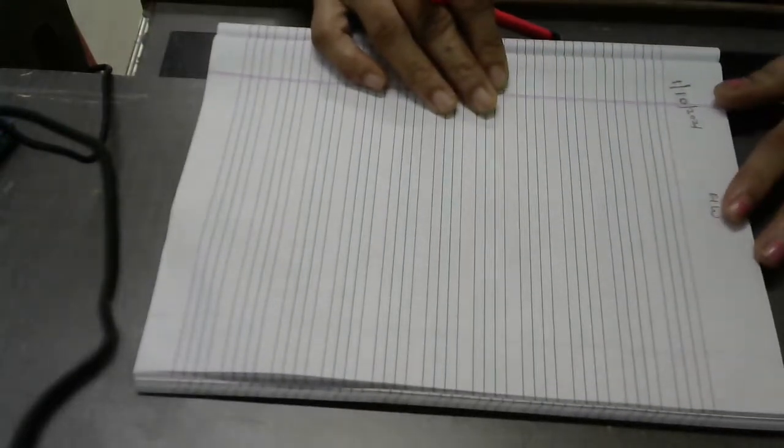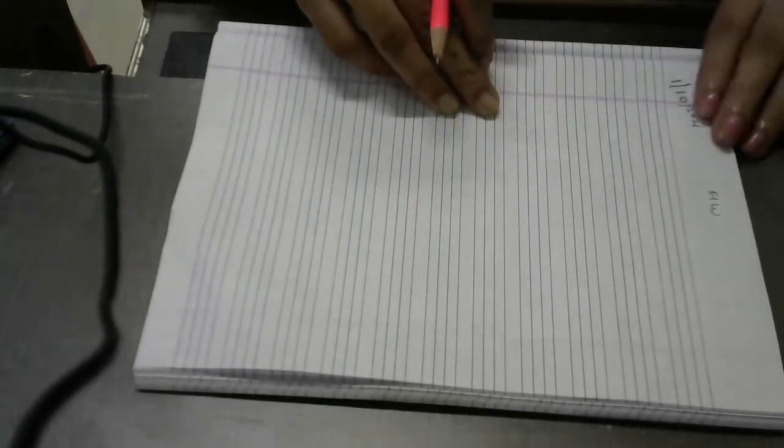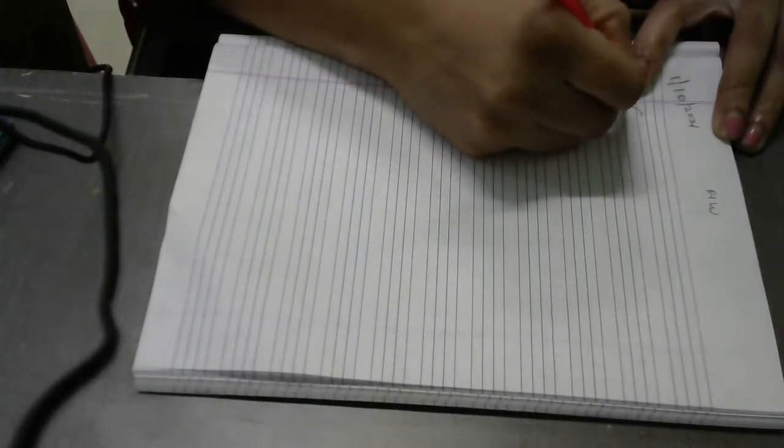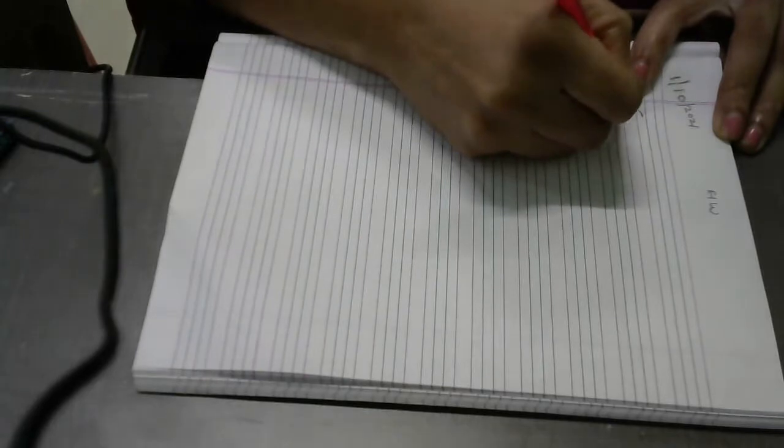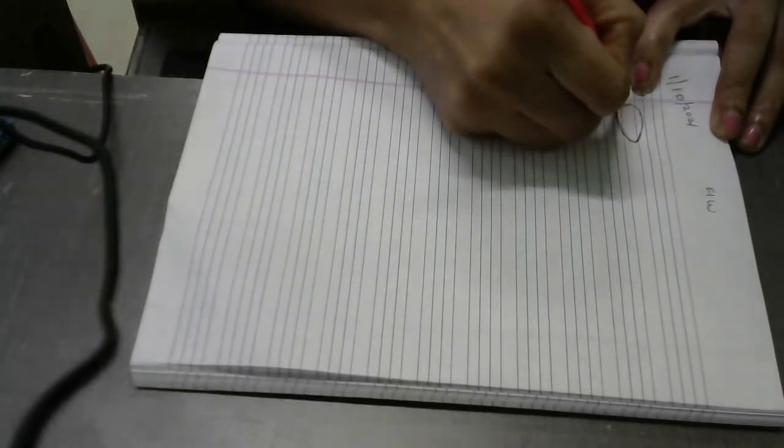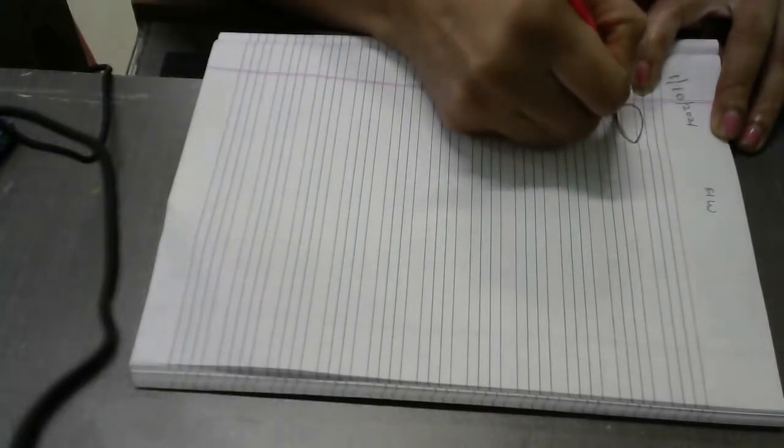Today we are going to learn how to write letter E. So everyone will draw a picture of an egg. Draw a small curve like this, and then a small curve. One more time. Egg. This is an egg.